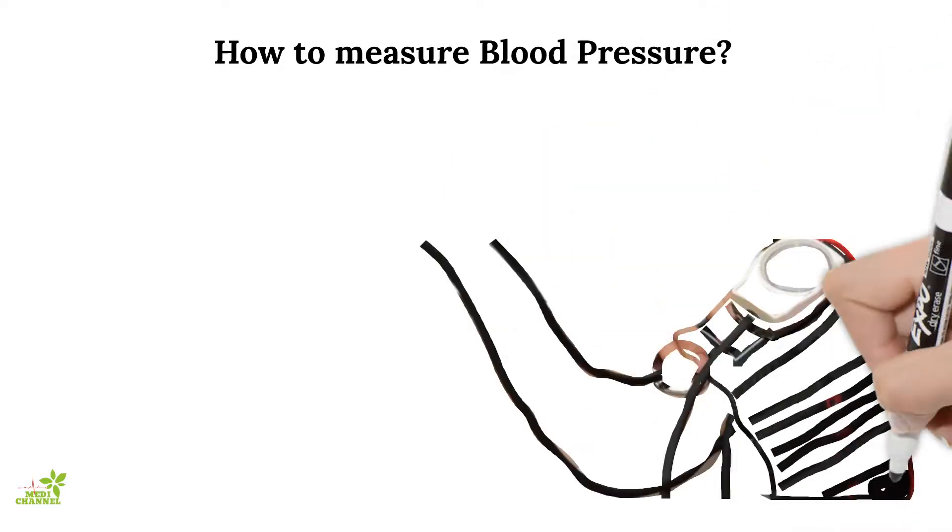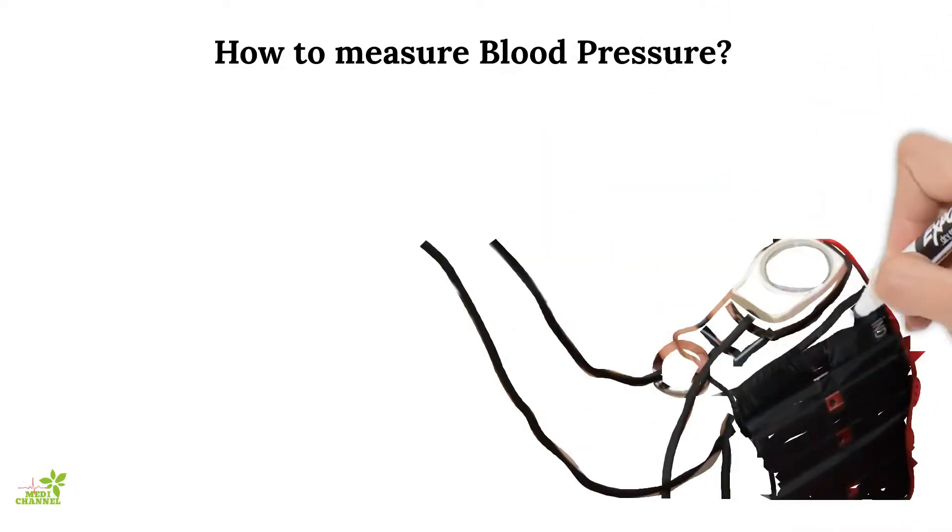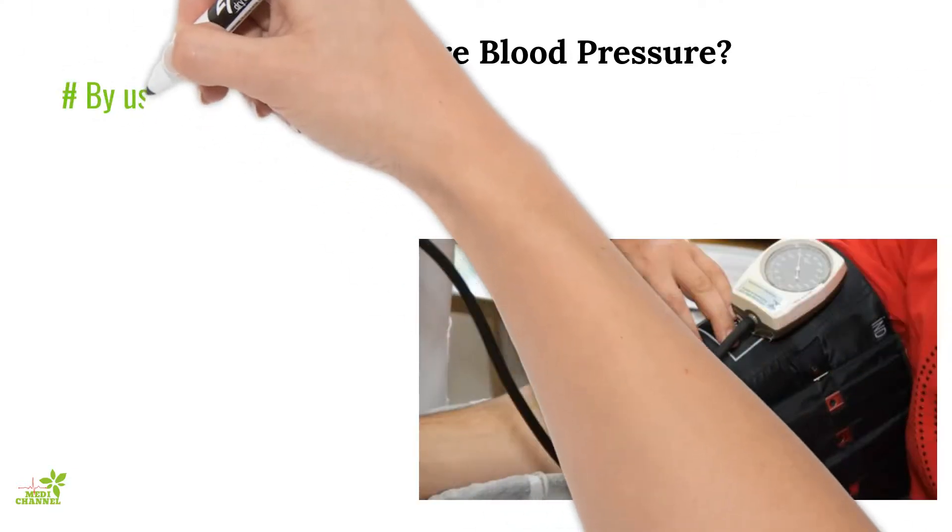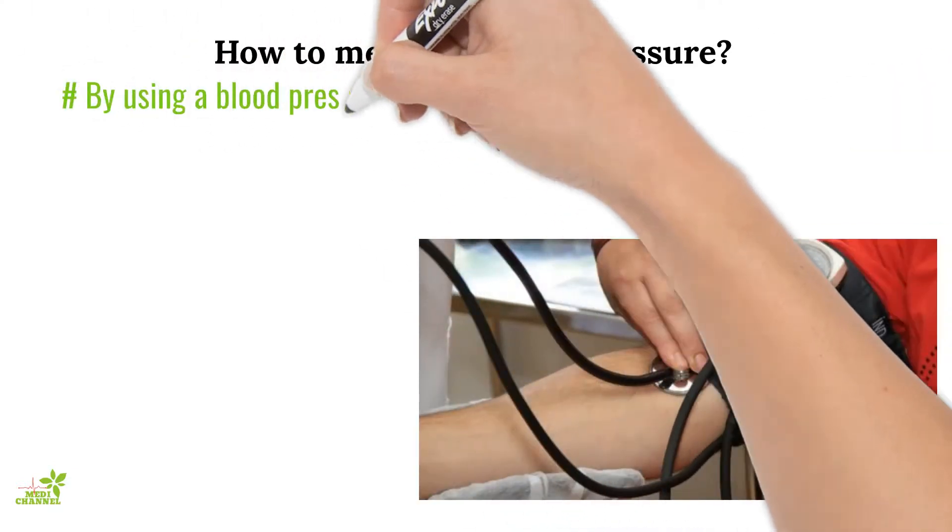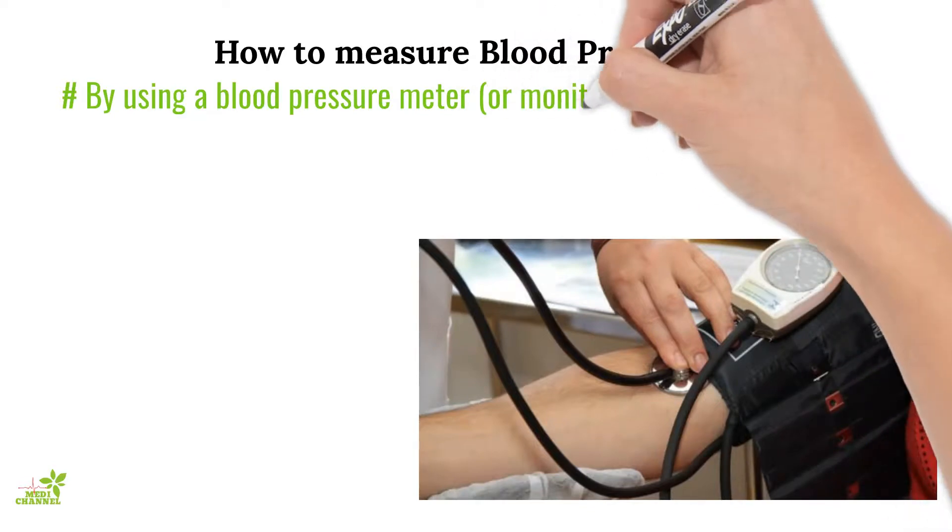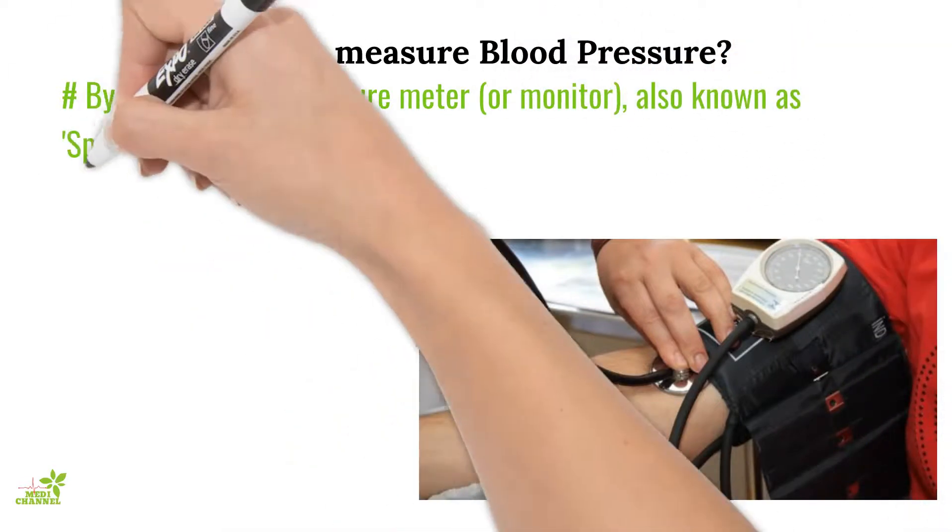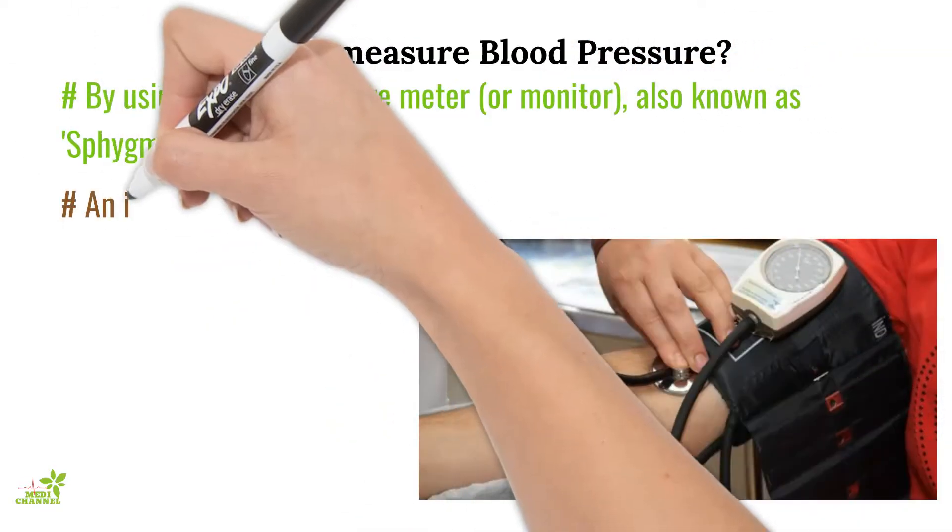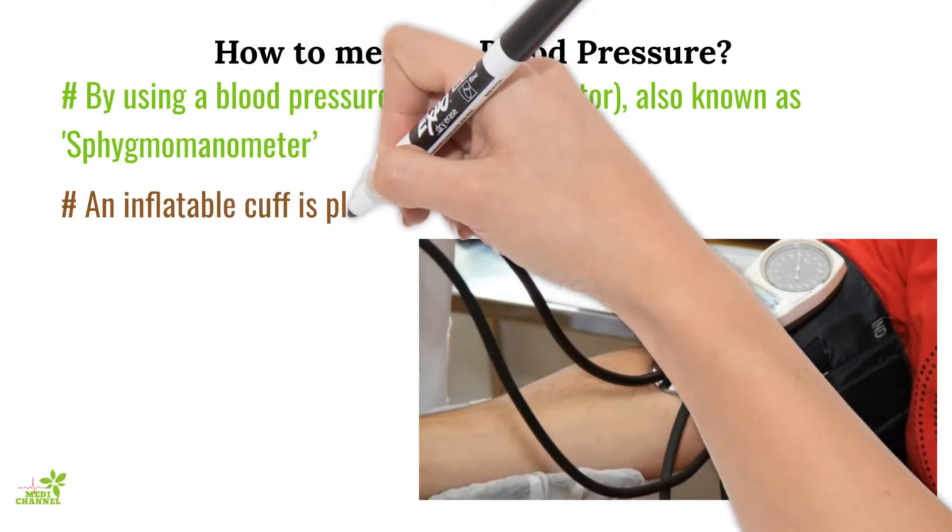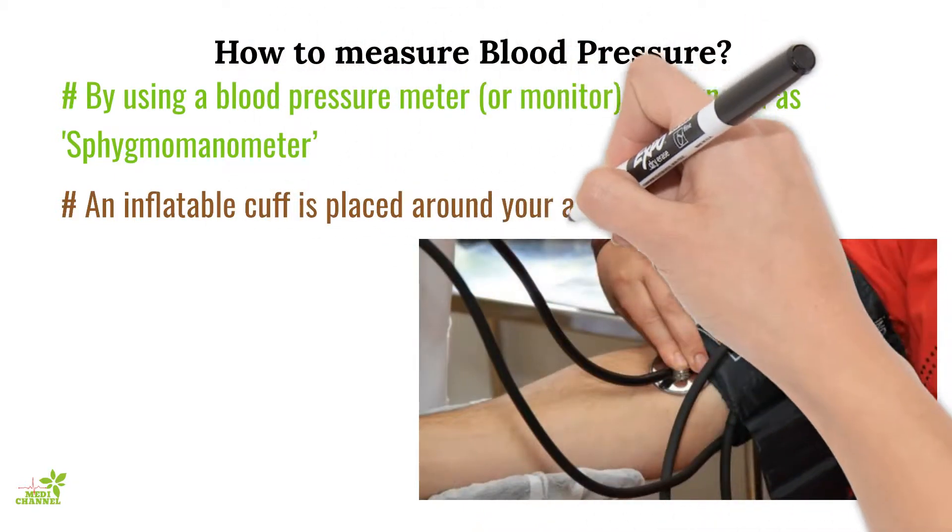An inflatable cuff is placed around your arm, and a reading is taken from the gauge in millimeters of mercury. Two measurements are taken when reading the blood pressure. As noted before, the upper number is called systolic pressure and the lower number is called diastolic pressure.